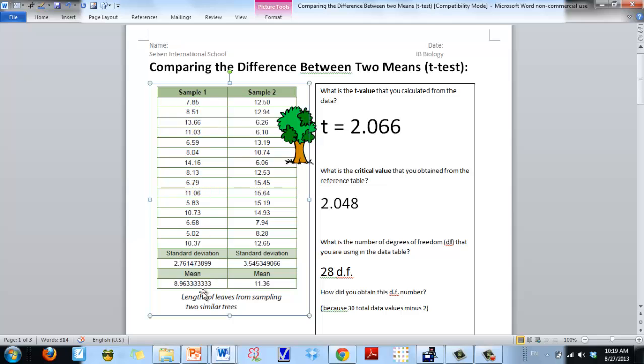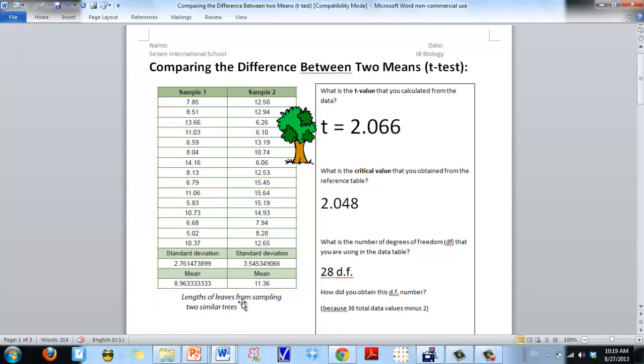Just say these are lengths of leaves from two similar trees, but we have reason to believe that one tree is getting more nutrients or something like that. Here are all the raw numbers. There are 15 numbers here for sample one from tree one. For sample two, there's 15 numbers. You can see here I've already calculated the standard deviation and the means for both.